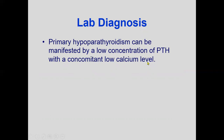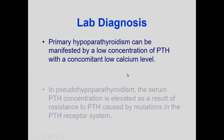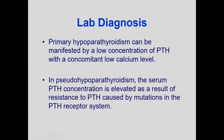Primary hypoparathyroidism is manifested by low PTH concentration with concomitant low calcium level. In pseudo-hypoparathyroidism, serum PTH concentration is elevated as a result of resistance to PTH caused by mutation in the PTH receptor system.